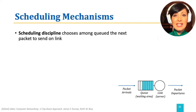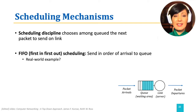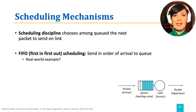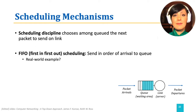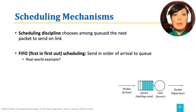Scheduling discipline chooses the datagram to be sent out on the outgoing link. This could be done using a simple first-in-first-out scheduling. In the real world, this is similar to a person waiting in a line for a cashier in a single payment line. The first person arriving at the line will pay first and leave first. In FIFO scheduling, packets arriving to the output port queue will be put on the output line in the same order of arrival, similar to the payment line queue.